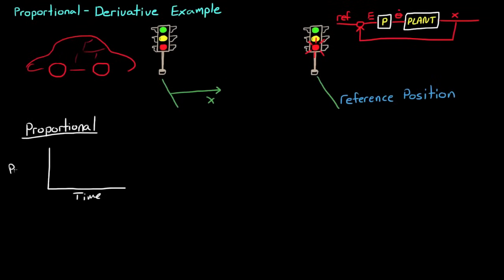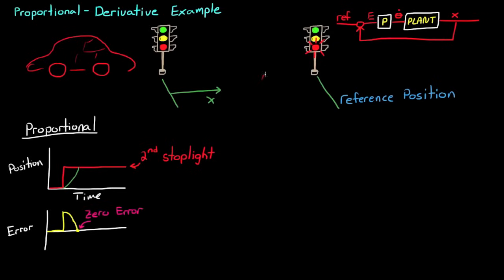So now let's apply a proportional controller to that and see what happens. Again, your reference position would step up to the position of the second stop light. And since initially your error is large, you apply a large proportional change in pedal angle. The car begins to accelerate, and as you get closer to the stop light, the error gets smaller and smaller, and the magnitude of the change of pedal also gets smaller. Eventually, you arrive at the light, and right when you're there, the error goes to zero, because you're at the position you want, and you stop changing the angle of the pedal. So everything's okay, right? Wrong.